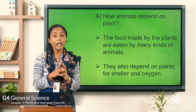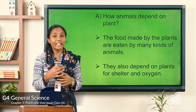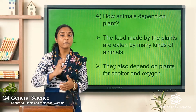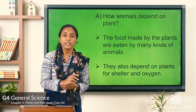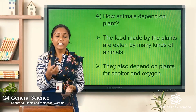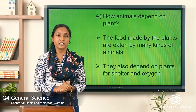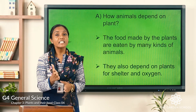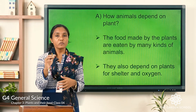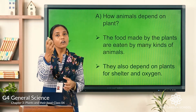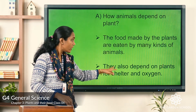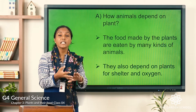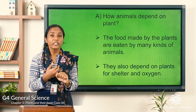Through the process of photosynthesis, plants intake carbon dioxide to make food and release oxygen into the atmosphere. Animals inhale this oxygen and release carbon dioxide back into the atmosphere, which the plants then absorb. So animals depend on plants for food, shelter, and mainly oxygen.